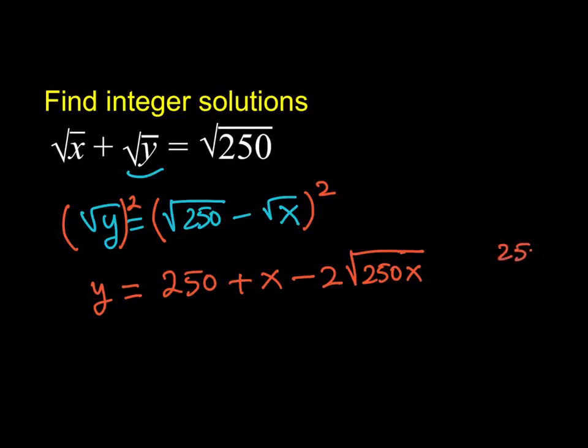Now, but this can be simplified, obviously, because 250 can be broken down. How do we break it down so that we have a perfect square? Well, 25 is a perfect square, so I can definitely write it as 25 times 10. And the square root of 25 is going to be 5, so that will be multiplied by the 2. So, from here, I should be getting something like 2 times 5, which is 10, times the square root of 10X.